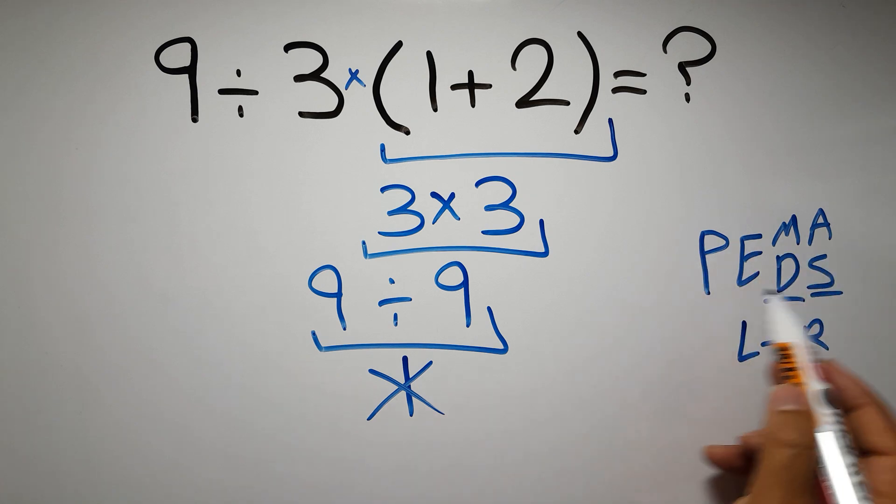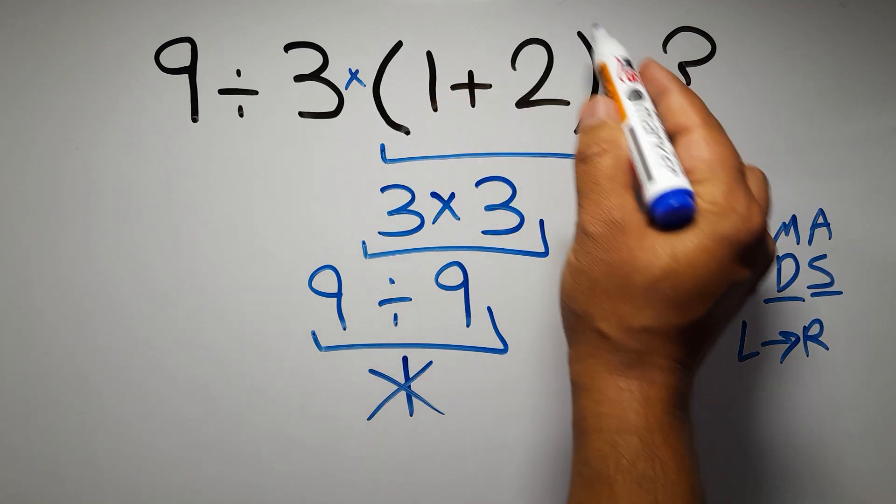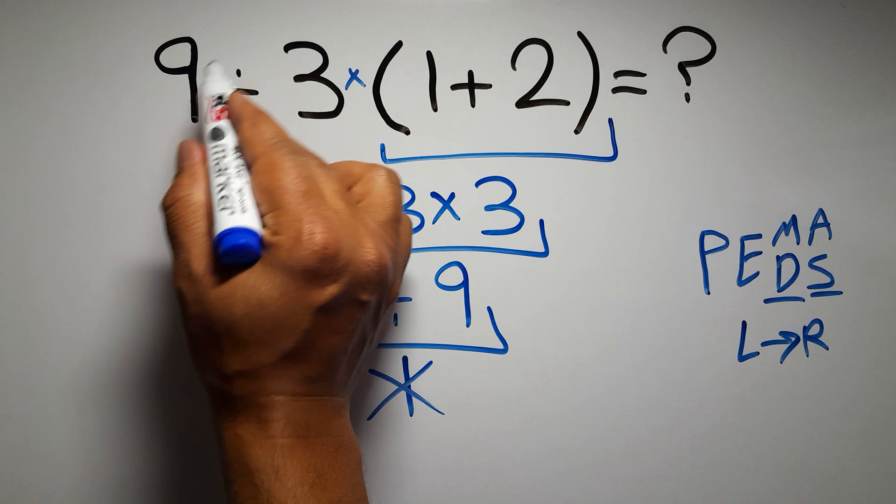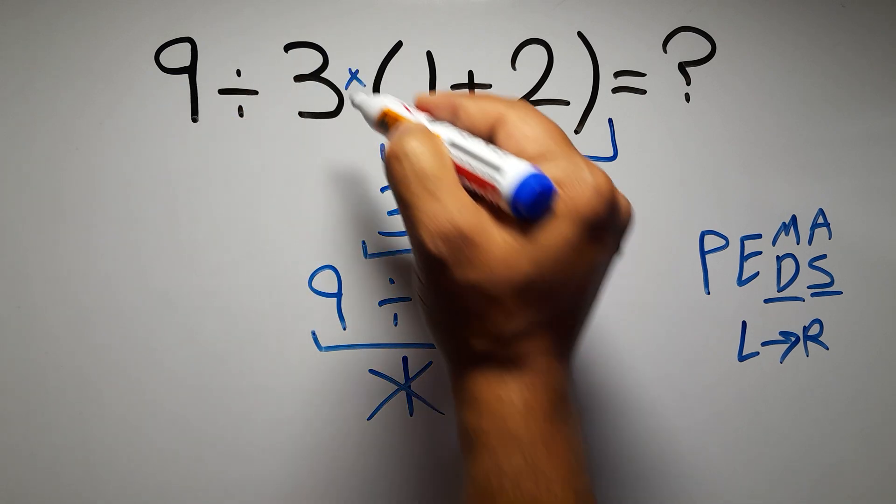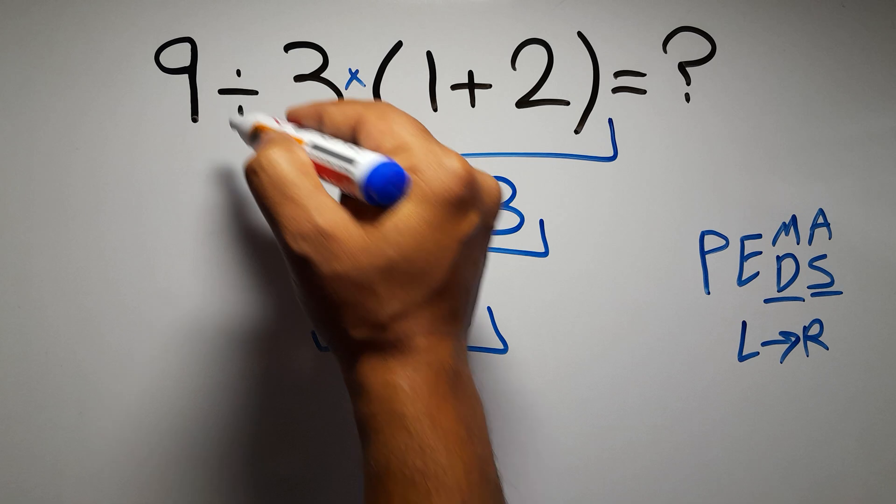Okay, so according to PEMDAS, first we have to do these parentheses, then this division, and finally this multiplication. If we do this multiplication before this division, it is wrong.